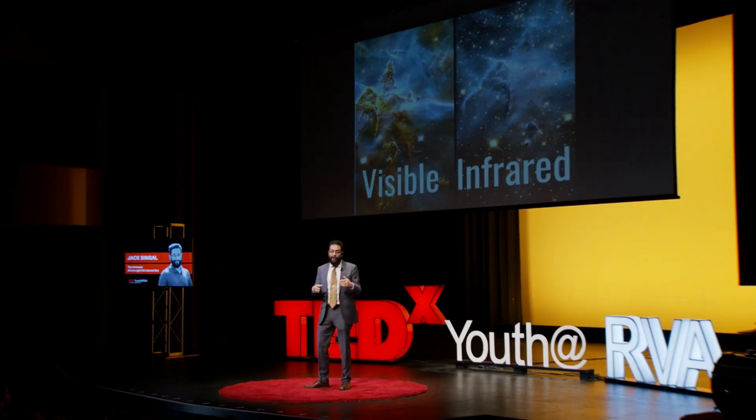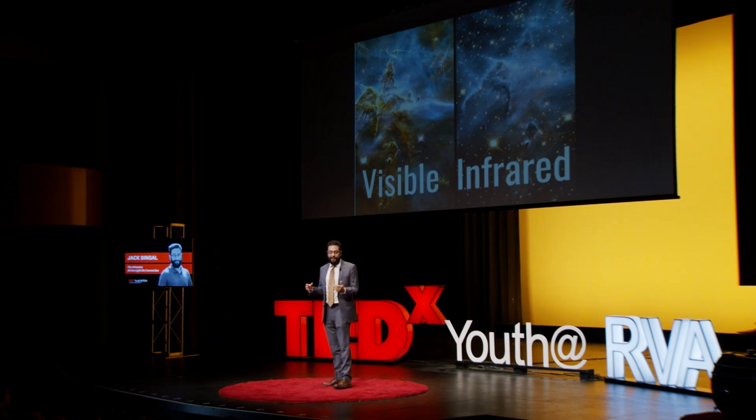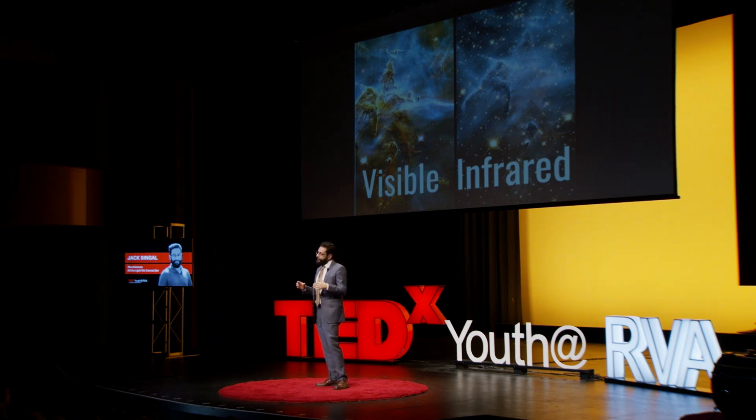Those were some hopefully pretty examples of how, in order to build up a systematic understanding of what's going on in the universe, we have to use all the kinds of light. Without doing that, we wouldn't know what black holes can do, we wouldn't know what most of the ordinary matter in the universe is up to, and we wouldn't know what makes up a galaxy. So next time you look up at the sky on a dark night, or through a telescope someone has set up, think about what you're seeing — but also think about what's there that you can't see. Thank you.